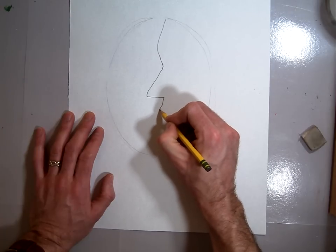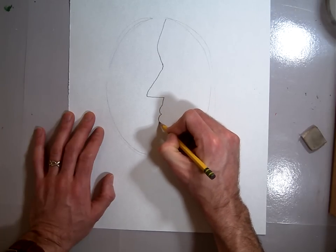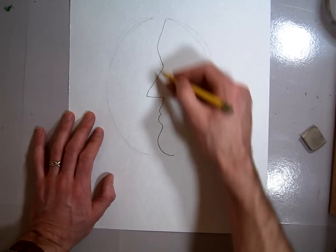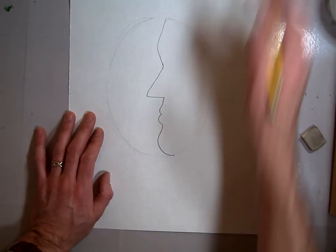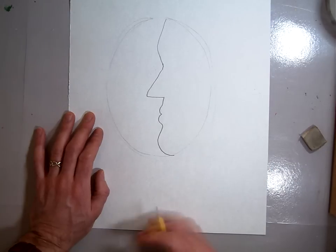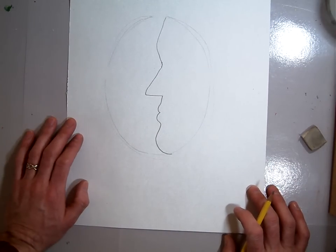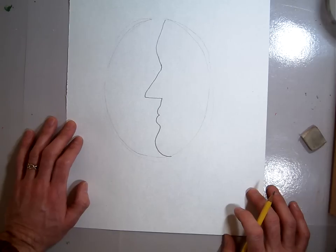Then he would curve down for the lips and do the chin. So he would create a profile centrally in the middle of the face. Do something like that on your paper. It doesn't have to be exactly like mine, but in the same general idea.